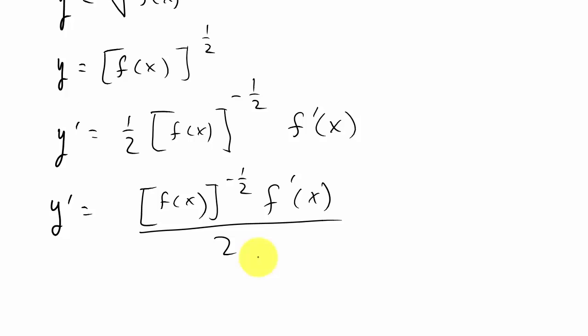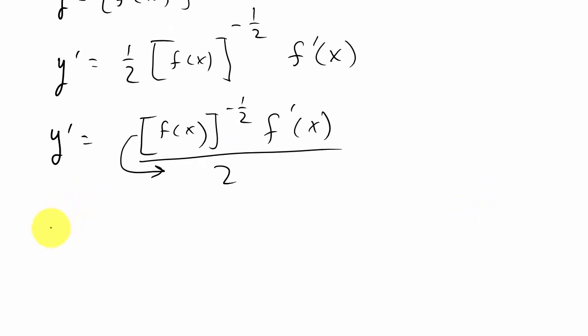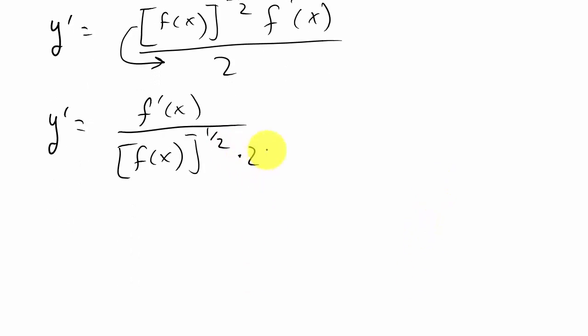Now I can bring this down and that'll change the sign of the exponent, so I get y prime is equal to f prime of x over f(x) raised to the positive one-half times 2.